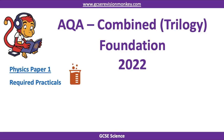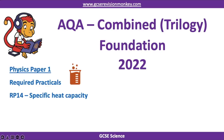Hello and welcome to this Revision Monkey video on the required practicals for the 2022 AQA Combined Science Trilogy Physics Paper 1 Foundation exam. The Trilogy version involves six one-hour-and-15-minute papers at the end of the course. For Physics Paper 1, the exam board has asked you to focus on specific heat capacity and current-potential difference graphs, otherwise known as IV graphs.